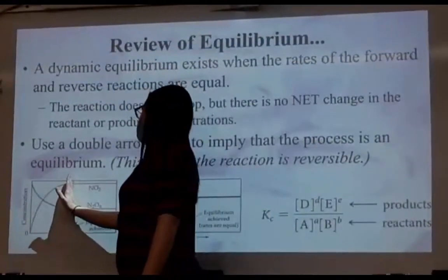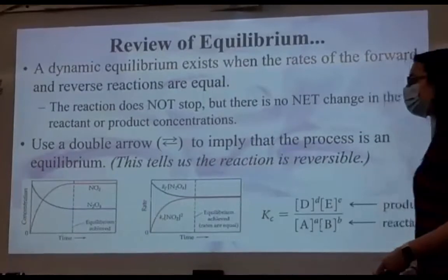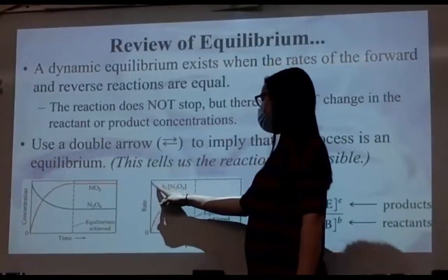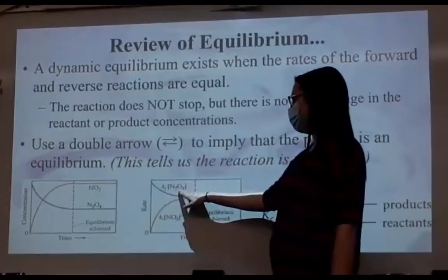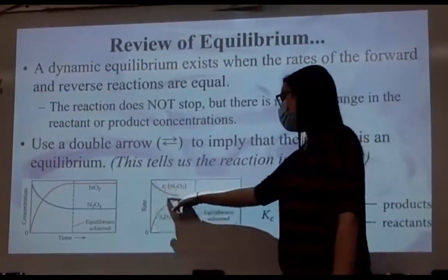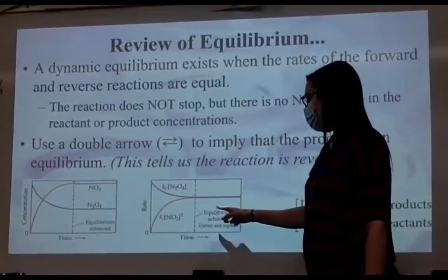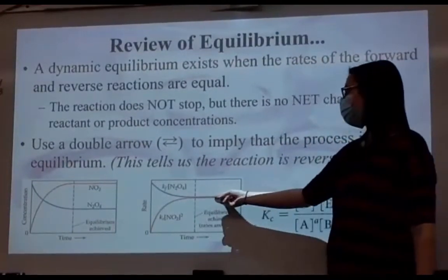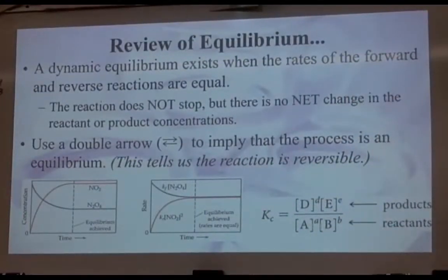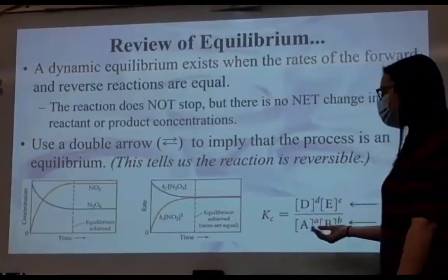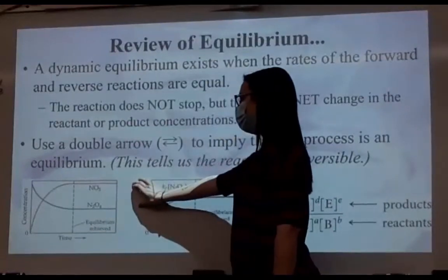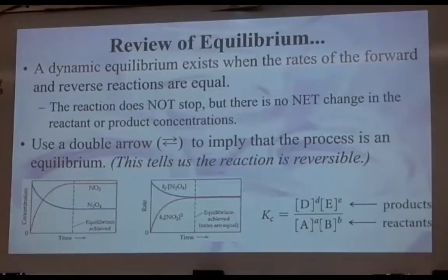Once we hit the time when the concentrations remain constant, we've hit equilibrium. Now if we look at the rates graph, the rate law is k times the concentration of the reactant — for both the forward and reverse reactions. Once the rates are equal, we've achieved equilibrium. Concentrations remain constant, but notice the two concentrations aren't equal to each other — what becomes equal at equilibrium are the rates.